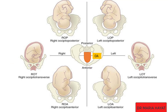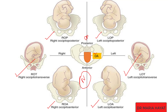In summary: occiput anterior, direct occiput anterior, right occiput anterior, and left occiput anterior are the normal fetal positions. While occiput posterior, left occiput posterior, right occiput posterior, right occiput transverse, and left occiput transverse are all malpositions.